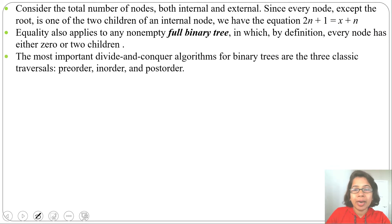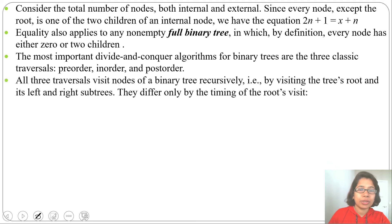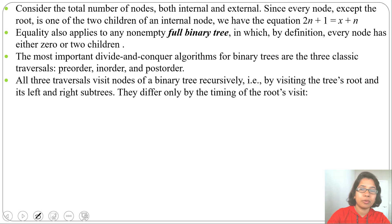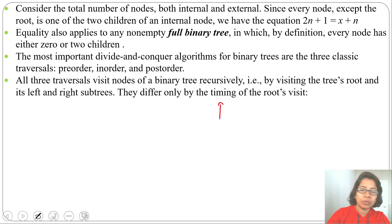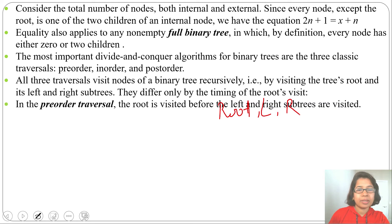The most important divide and conquer algorithms for binary trees are the three classic traversals: pre-order, in-order, and post-order. In all three traversals we visit nodes recursively — visiting the root and visiting the left and right subtrees. The order may change, but in pre-order: first we visit the root, then the left subtree, then the right subtree. So pre-order means root, left, right.